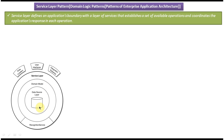Here you can see a data source layer, the domain model, and the service layer. This service layer defines the boundary of the application and contains a layer of services with different kinds of services and functionality. When a user wants to communicate with this application, they have to call the service layer, which contains a set of services.